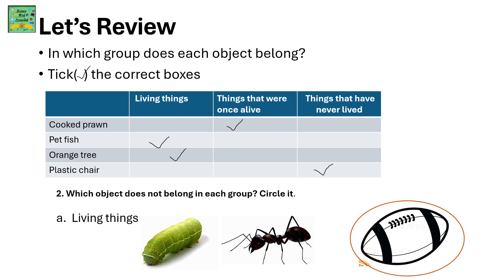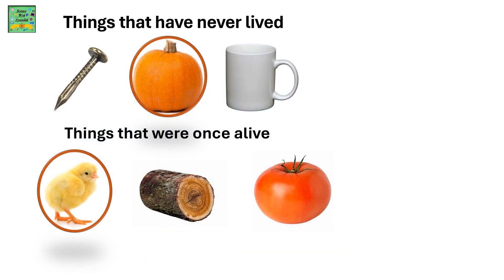Plastic chair belongs to things that have never lived. Which object does not belong in each group? Circle it. In the group of living things, a rugby ball does not belong. In the group of things that have never lived: a screw has never lived, a pumpkin was once alive, and a mug has never lived. The pumpkin does not belong to this group, so it has been circled.